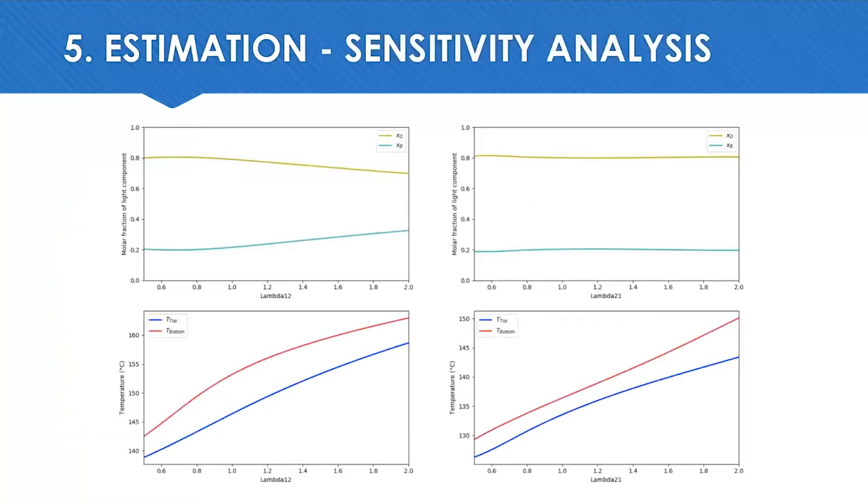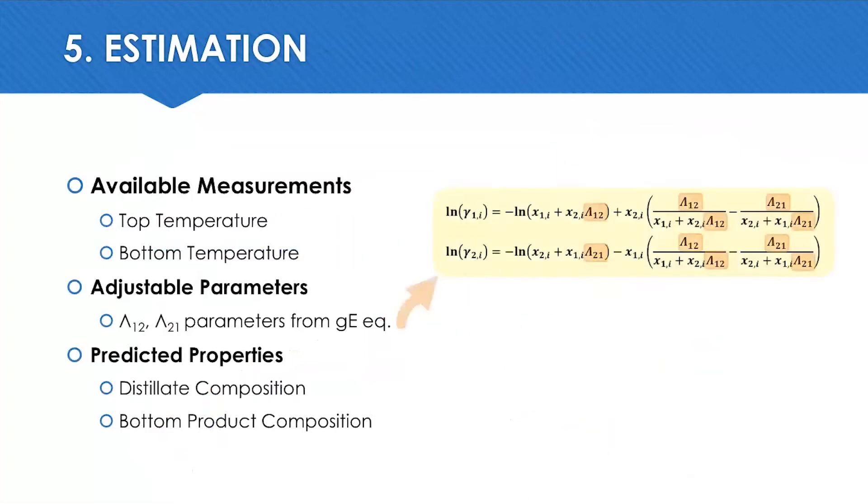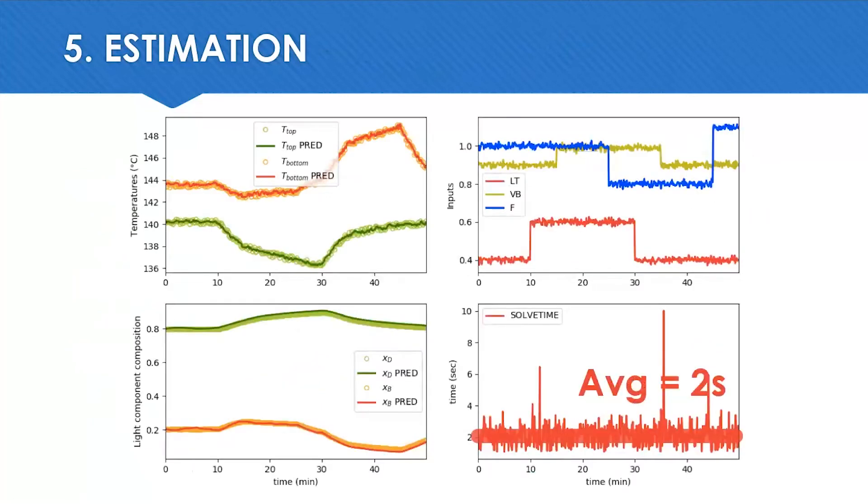This is the sensitivity analysis relating how the change in the parameters affect the controlled variables. You can see that the estimator has a lot of degrees to adapt the model. Here is a summary of the estimation part. The top temperature and the bottom temperatures are available measurements. The excess Gibbs model parameter values are estimated at each step by the moving horizon estimator, and we verify the predictions for the distillate and bottom product compositions. Here we can see that the MHE was able to keep up with the process simulator, predicting the compositions with little error. The average time to solve each cycle was about two seconds.